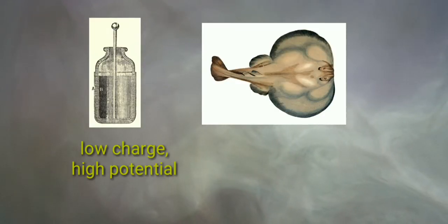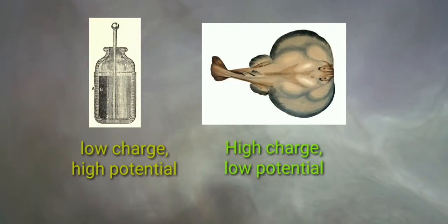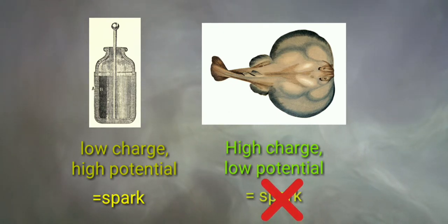Leyden jar got low charge but high potential, but torpedo fish got high charge low potential. That's why torpedo fish didn't create spark. Big potential difference is the actual cause of spark. Interesting, isn't it?